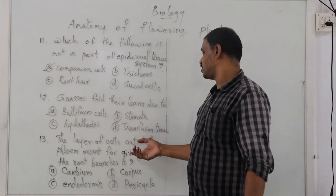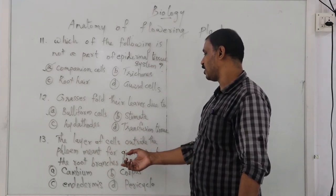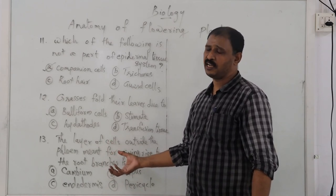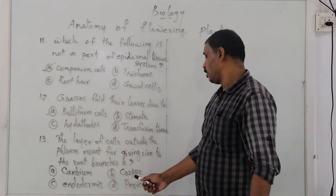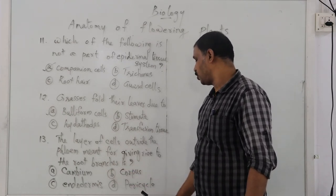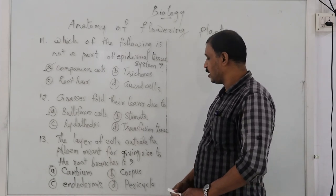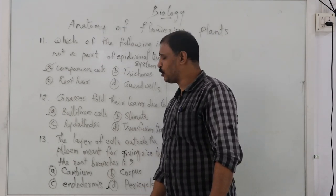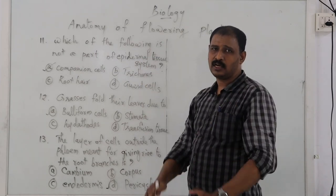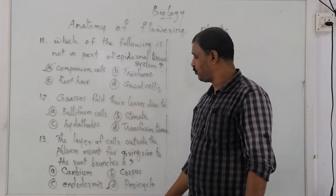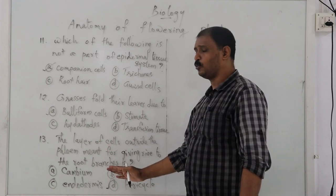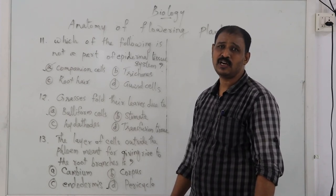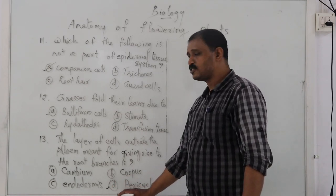The layer of cells outside the phloem meant for giving rise to root branches — which part is this? Options: cambium, corpus, endodermis, or pericycle. The correct answer is pericycle. The pericycle is located just inside the endodermis. The endodermis has suberin deposition for waterproofing and leakage prevention. Lateral roots originate from the pericycle. The correct option is option D — pericycle.